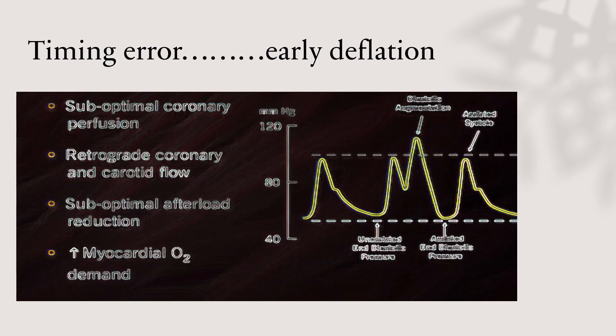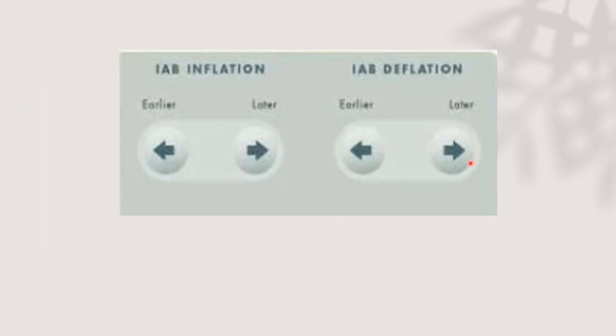As we mentioned before, the coronary arteries are perfused during inflation of the balloon, so early deflation will lead to suboptimal coronary perfusion and may lead to retrograde coronary and carotid flow that leads to angina pain. It can also lead to suboptimal afterload reduction, and all of this increases myocardial oxygen demand. To solve this issue, we will make the deflation slightly later on the console, and this can be judged through the arterial waveform on the console.